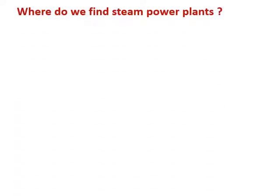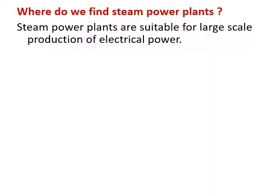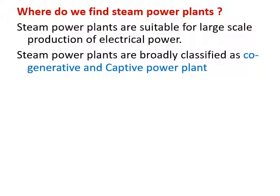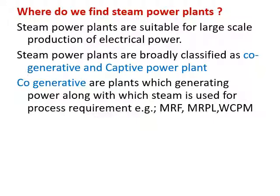Where do we find steam power plants? We find steam power plants in large-scale production of electrical power. Steam power plants are broadly classified as co-generative and captive power plants. Co-generative power plants means if I am producing steam for a process and also using the steam for power, then they are called co-generative plants.